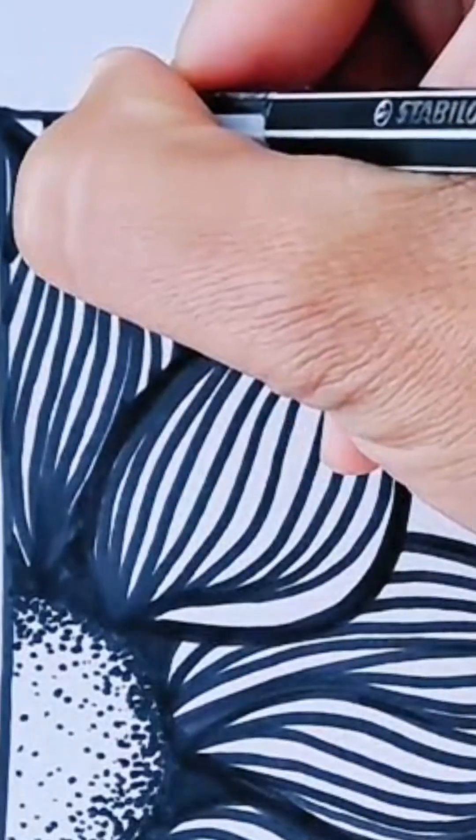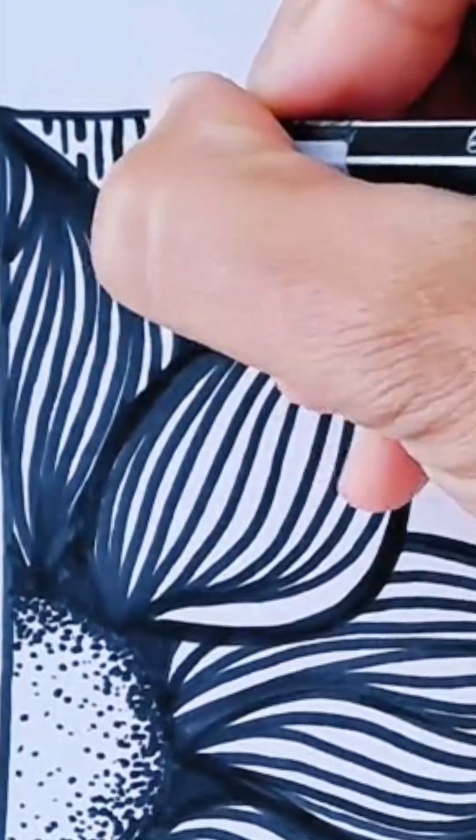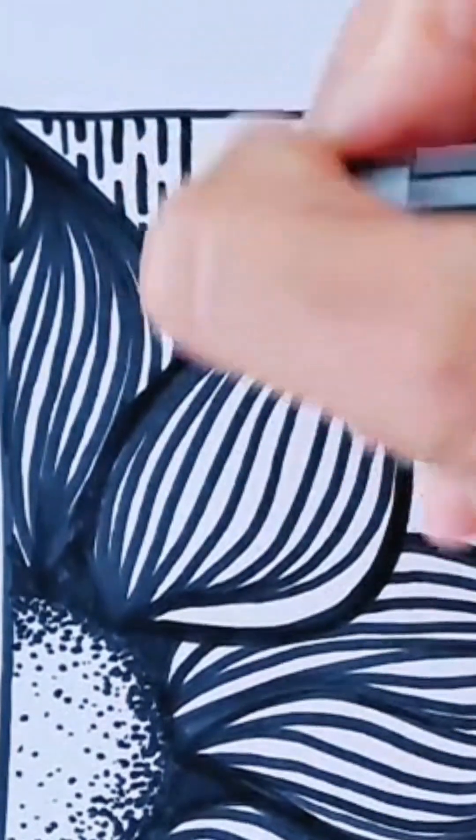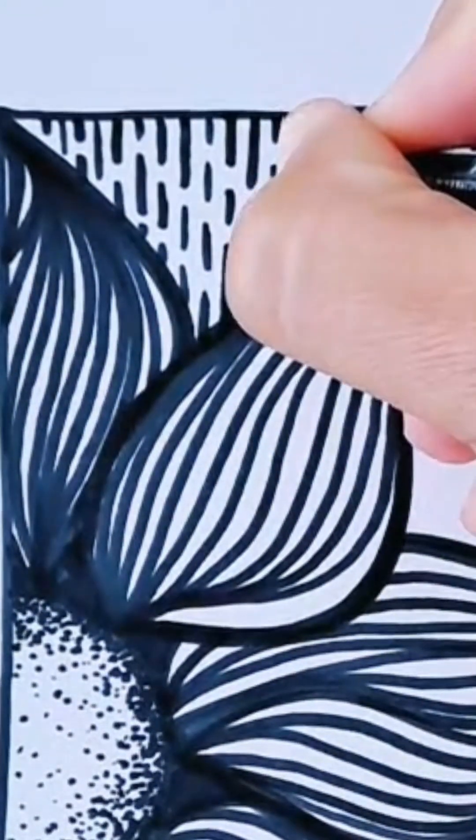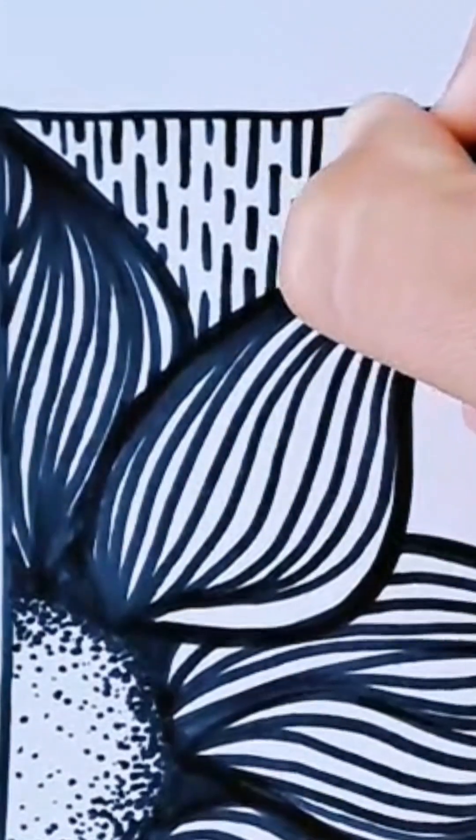For the background I've decided to just use some broken lines. I'm trying to keep them as straight as possible. I think that's a really nice contrast to the waves that are in the petals.